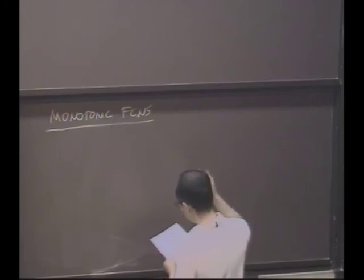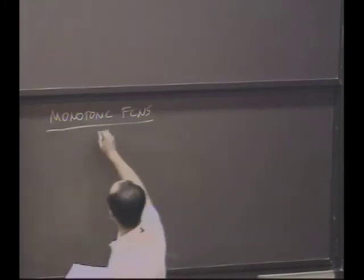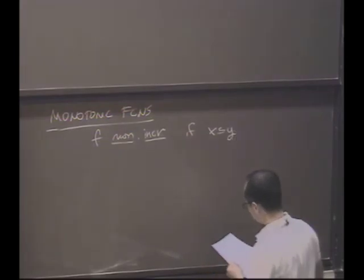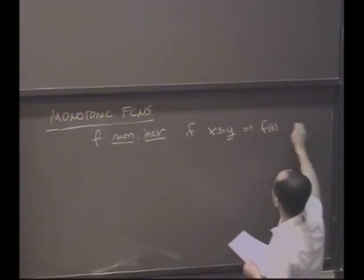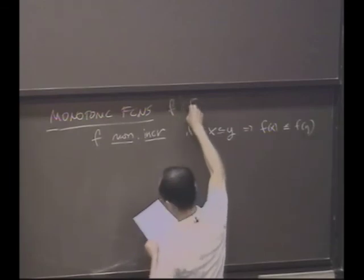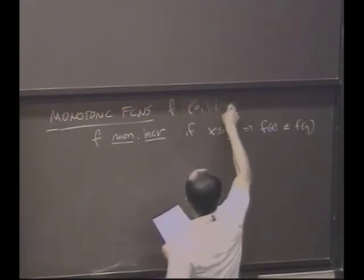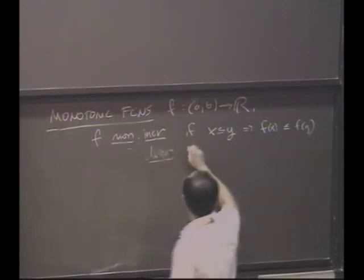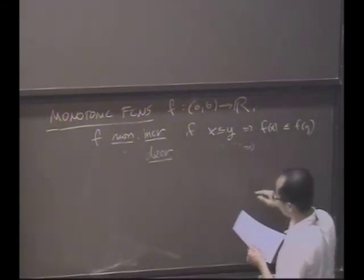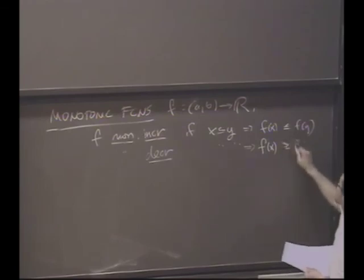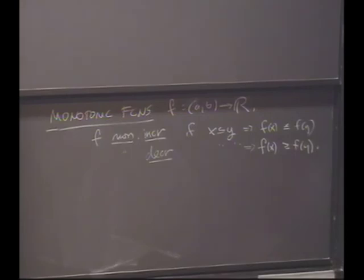So monotonic function basically means either monotonically increasing or decreasing. We'll say it's monotonically increasing if any time x is to the left of y, this implies what about f(x) and f(y)? f(x) is less than or equal to f(y). Yes, these are all functions from an interval into R. We're going to say f is monotonically decreasing if x ≤ y means f(x) ≥ f(y).